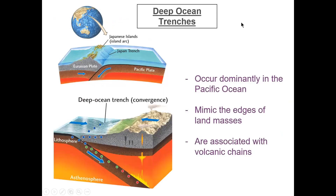Subduction zones occur dominantly in the Pacific Ocean. They mimic edges of land masses and are associated with volcanic chains. For example, the Pacific Plate is being pushed down below the Eurasian Plate, causing mountain building that created the Japanese islands. Tectonic plates are recycled throughout Earth's history — pushed underneath other plates, melted back into the mantle, while in other spots new crust is being formed.